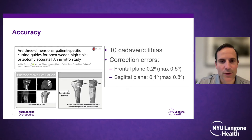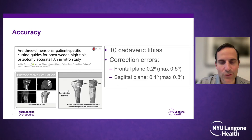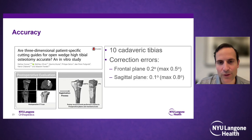Outcome studies have validated the accuracy of PSI guides. A study out of France examined 10 cadaveric tibias and found minimal correction errors — frontal plane 0.2 degrees, sagittal plane 0.1 degrees. The outcome cuts and corrections were virtually identical to the preoperative planning, which is quite impressive reliability.